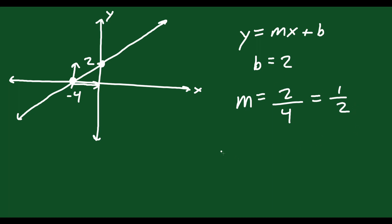So I know my b. I know my m. I can write my equation as y equals 1 half x plus 2. That's your final answer.